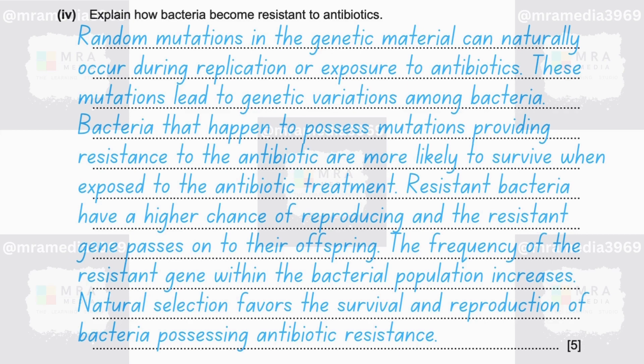As resistant bacteria survive and reproduce, the frequency of the resistant allele or gene within the bacterial population increases over successive generations. Natural selection favors the survival and reproduction of bacteria possessing antibiotic resistance. In an environment where antibiotics are present, these bacteria are better adapted to survive and proliferate compared to non-resistant strains. Over time, the resistant strains become dominant in the bacterial population due to their increased survival fitness in the presence of the antibiotic.